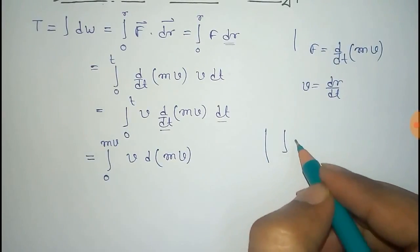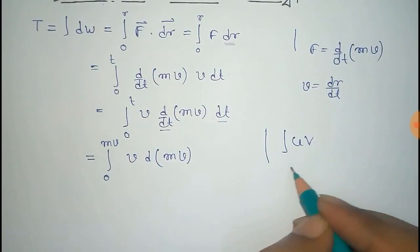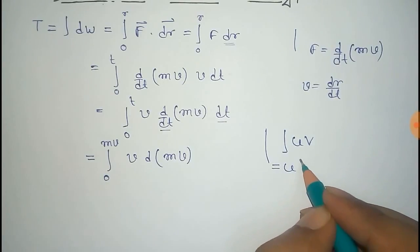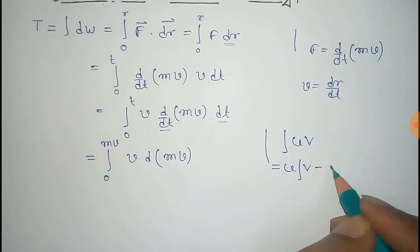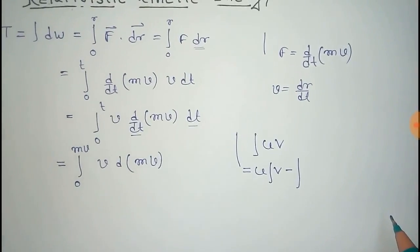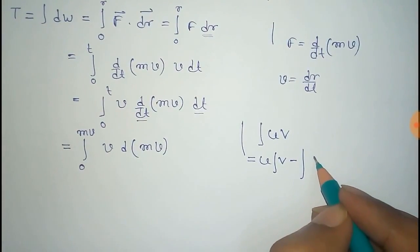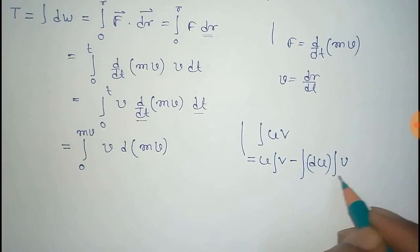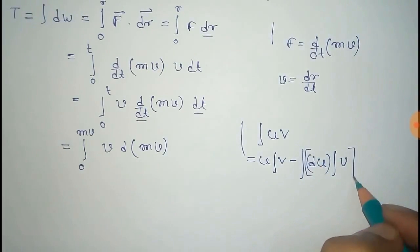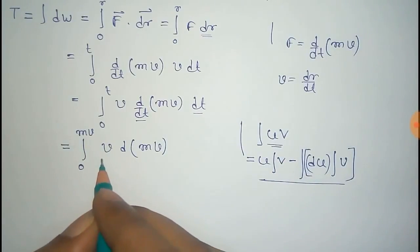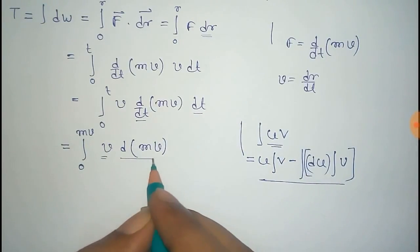Now we need to integrate this. We use the integration by parts formula: integral of U into V equals U times integral of V, minus the integral of the derivative of U into the integral of V.